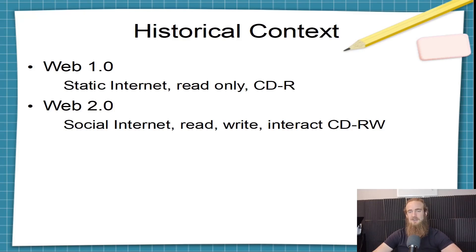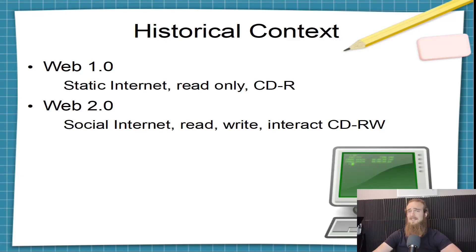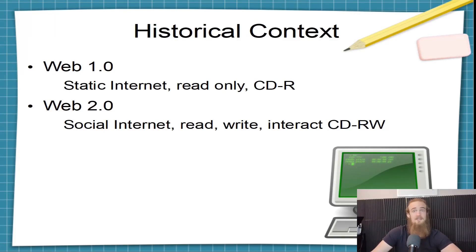The first important thing about Web 3.0 is to think about the differences between previous generations of the web to put things in context. So let's jump back to the 90s with Web 1.0. You're spending 10 minutes for AOL to load, listening to that hissing sound, and you finally get to a page where someone wrote an article about Congress. You can read that article, but you cannot like it, comment on it, or leave your favorite conspiracy theory under it — you can't do anything.